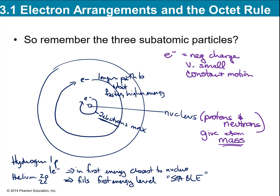Electrons are in constant motion and they follow a specific path — think of it like an orbital. Like how the moon orbits the Earth with a very specific path, not randomly flinging itself about, staying on a very predictable trajectory. Same thing with electrons — they're in constant motion in these orbitals. What they found is that electrons closer to the nucleus have a shorter path.